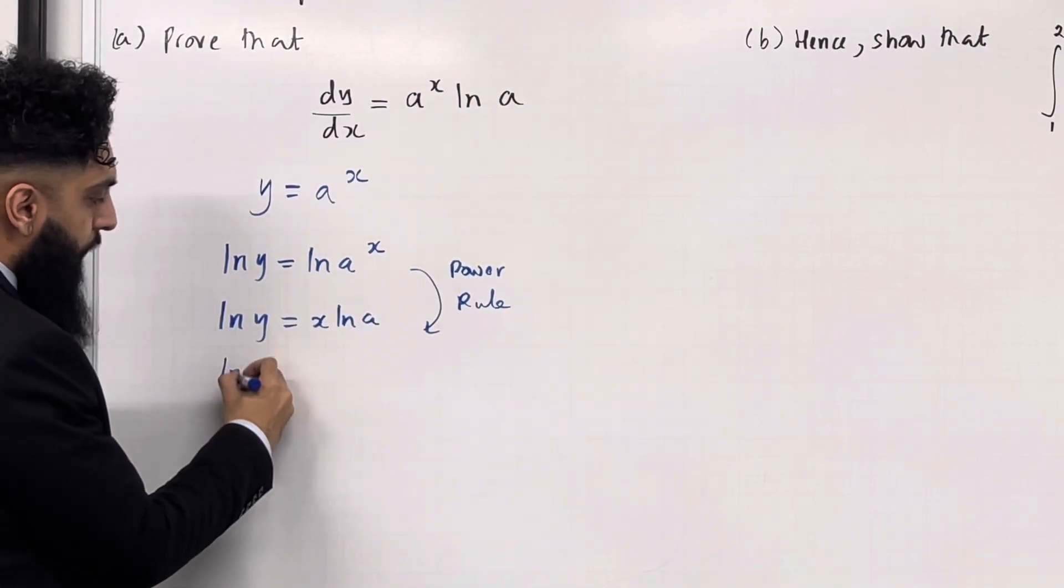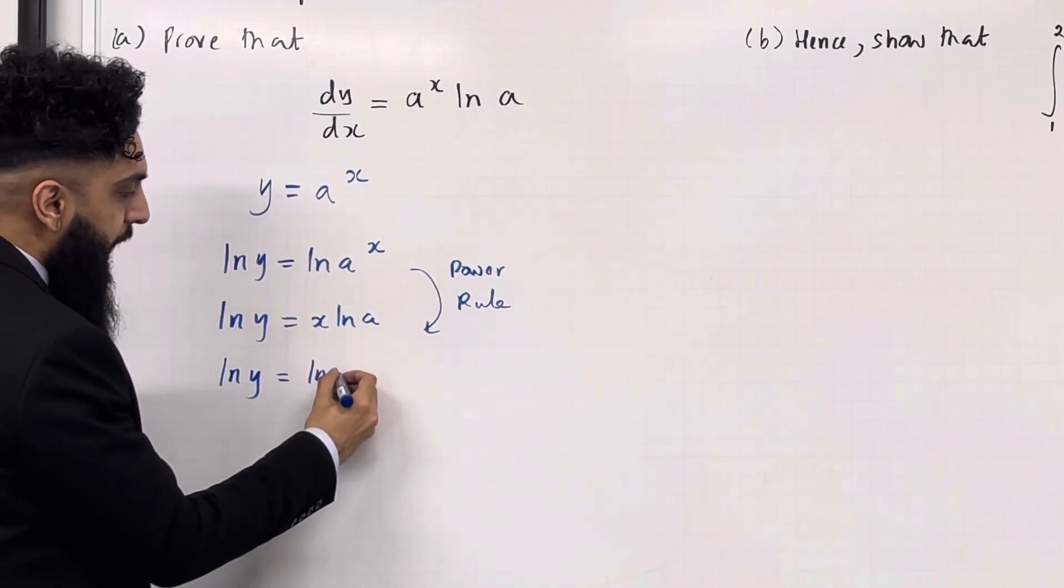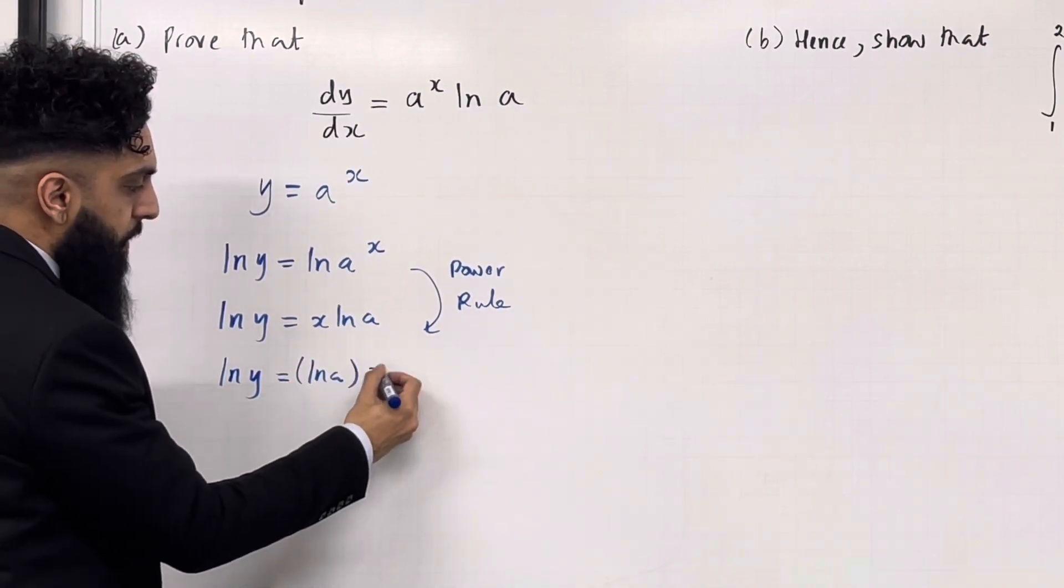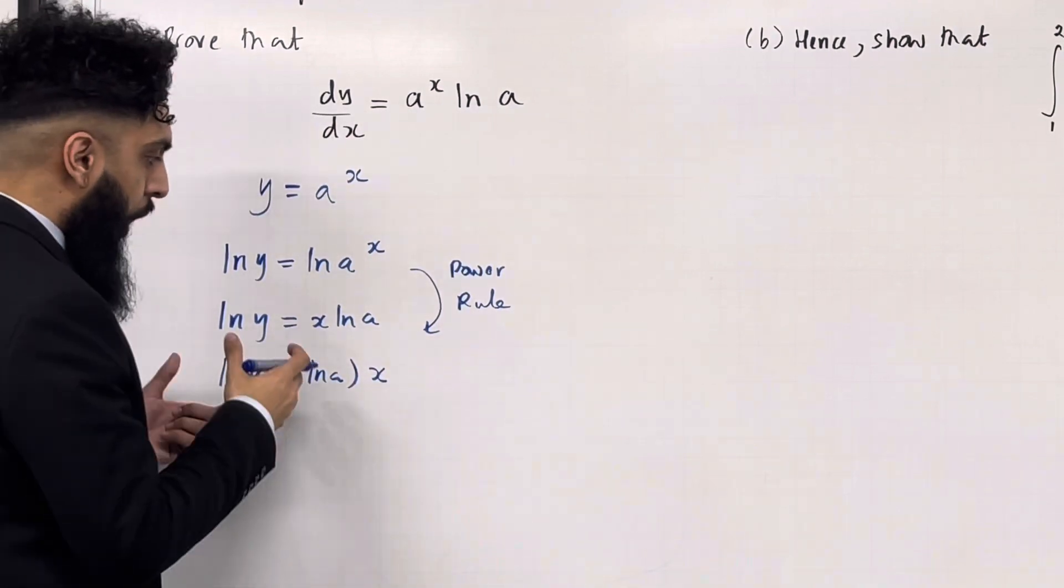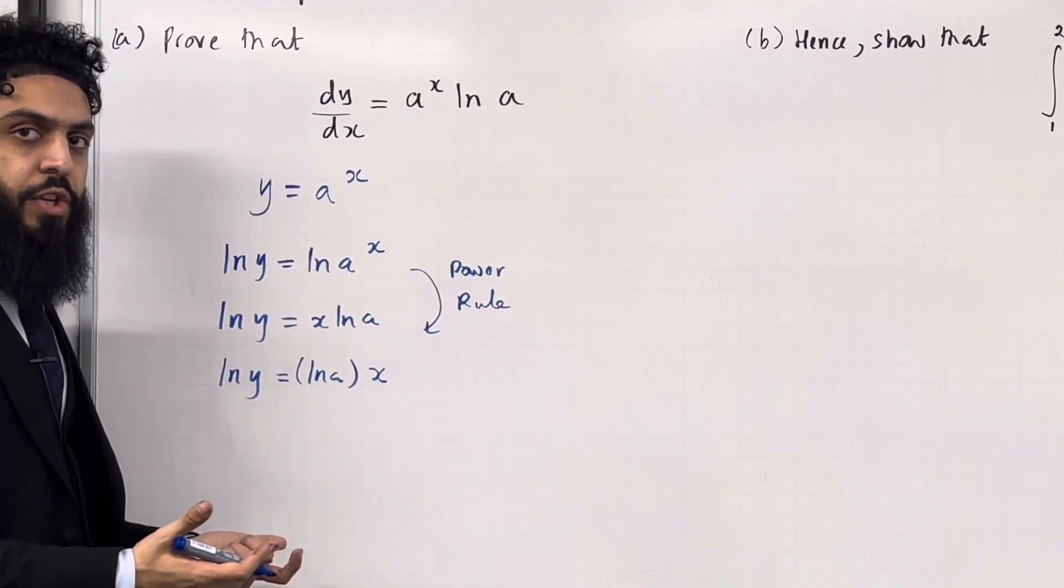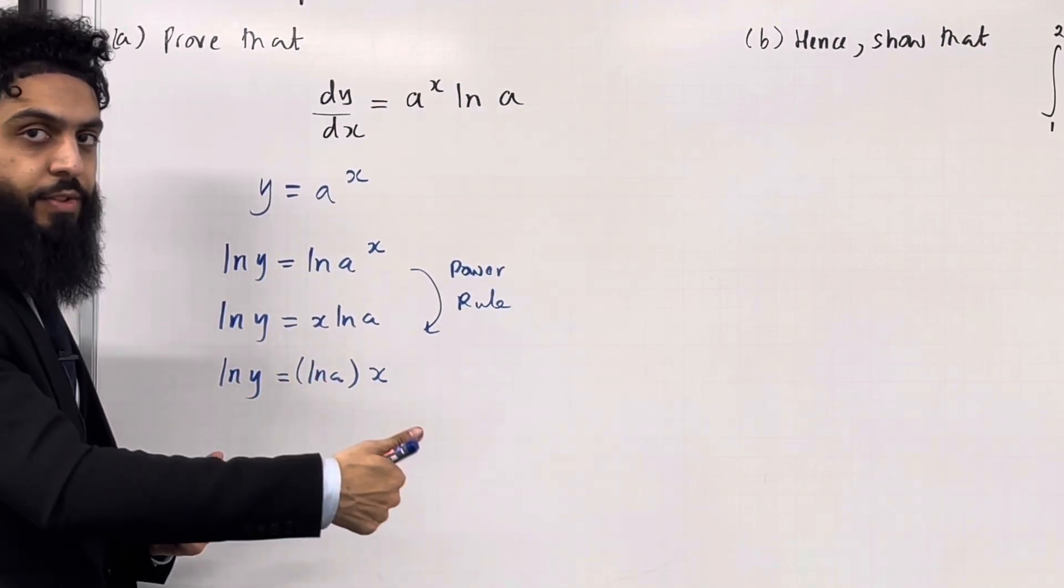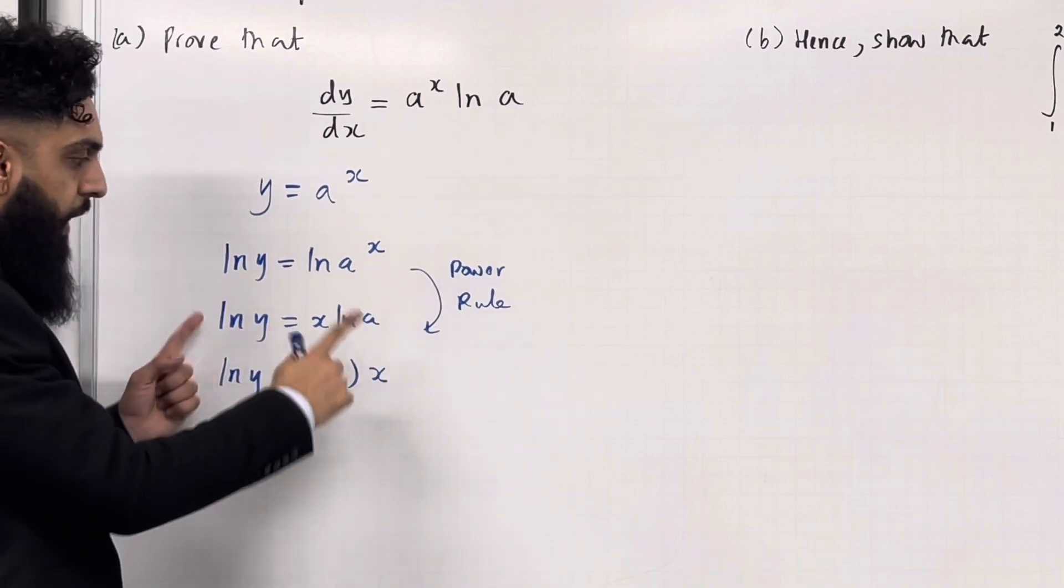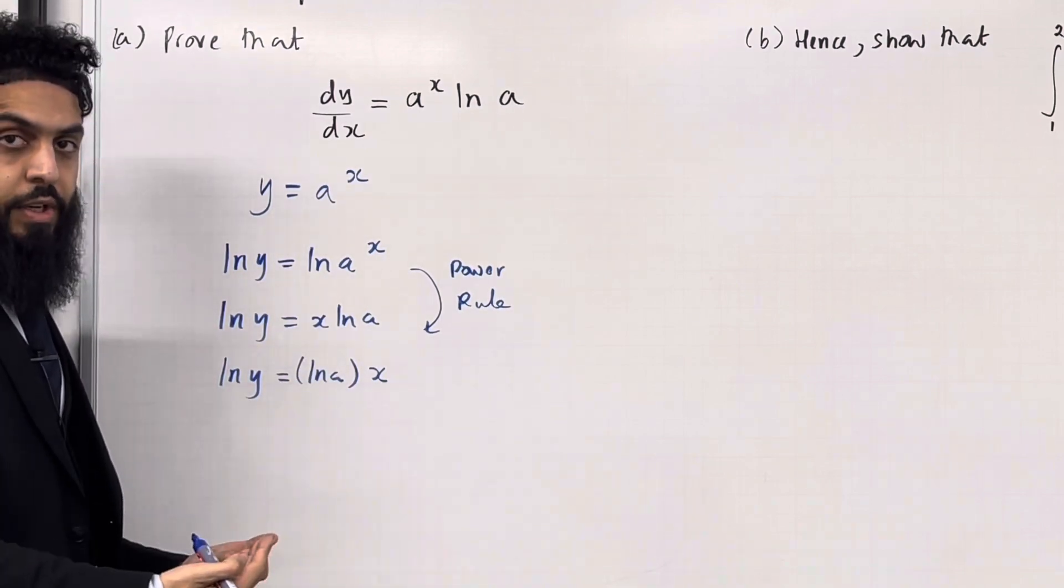In other words, I've got ln y equal ln a, which is a constant, multiplied by x. Now over here, we have an implicit equation, because y is not the subject and x is not the subject. So to differentiate this, we need to use implicit differentiation.